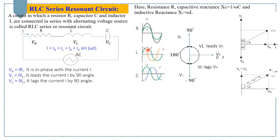Here is the phasor diagram for the RLC series circuit. In the case of the resistor, voltage and current are in phase. In the case of the inductor, the voltage leads the current by 90 degrees. In the case of the capacitor, the voltage lags the current by 90 degrees. We take the current as a reference because in a series circuit the current in each element remains the same.